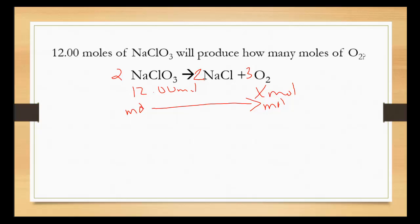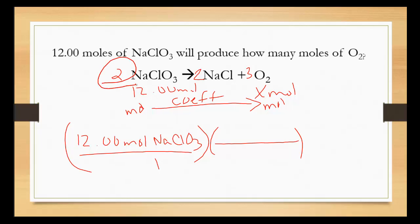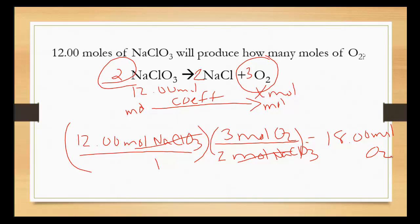That means that I need to start putting the number over 1. 12.00 moles NaClO3 over 1. Where we're going from is the NaClO3. Where we're going to is the O2. That calculates out to be 12 times 3 divided by 2, which equals 18. And that's an overview on how we use chemical equations in stoichiometry.